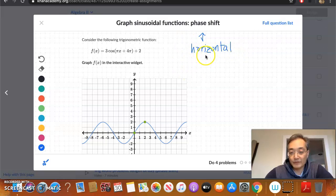Horizontal shifts, of course, means shifts that go to the left or to the right. So let me give you an example here of a phase shift.